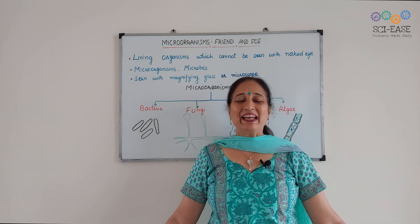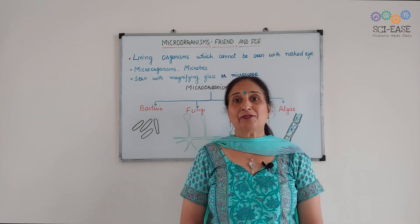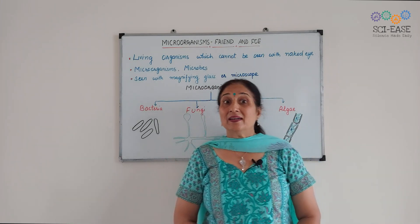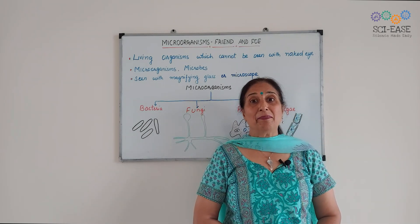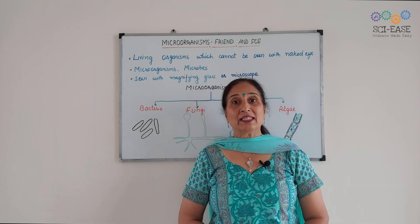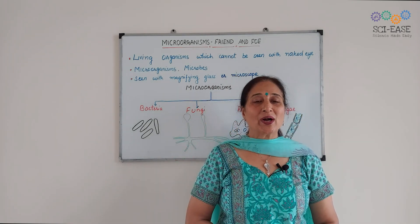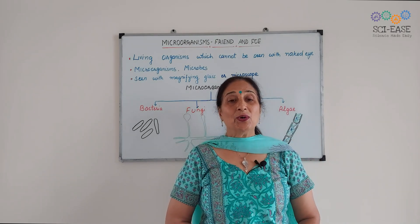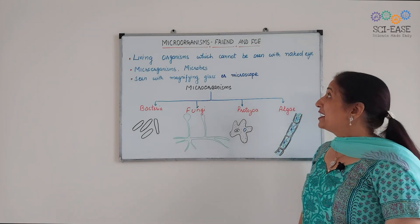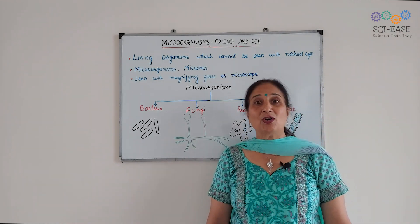Hello everyone, welcome to SAI Ease. We see a lot of plants and animals, a variety of plants and animals around us. But some living beings we can't see with our unaided eye, or naked eye. They are known as micro-organisms. Today in this video I'm going to discuss micro-organisms friend and foe, one of the chapters of Class 8.